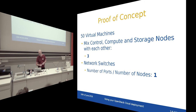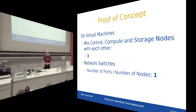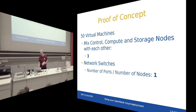For the proof of concept, with only 50 virtual machines, you could actually run everything on one system. However, for a certain level of redundancy, I would choose three nodes and one 24-port 10 Gbps switch.